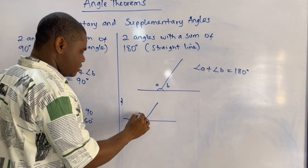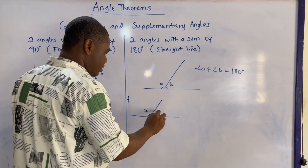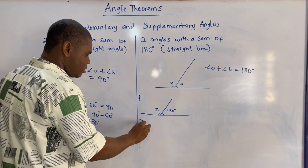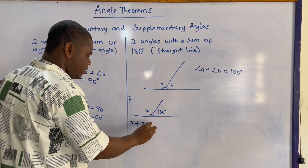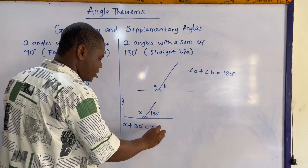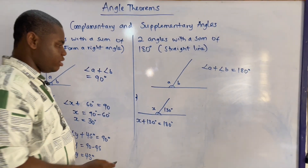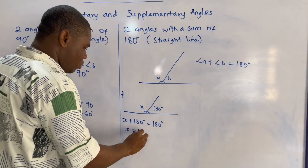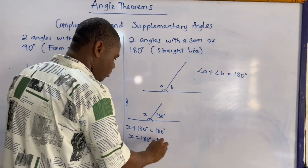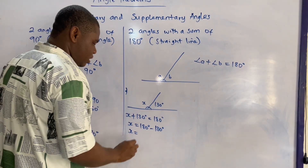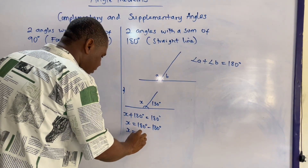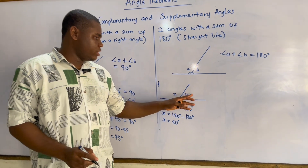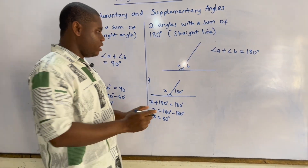For an example, we have x and 130 degrees. To find x, x plus 130 degrees equals 180 degrees, which shows they are supplementary. So x equals 180 minus 130 degrees, giving us x equals 50 degrees. If you add 50 to 130, it gives you 180 degrees.